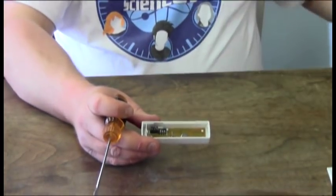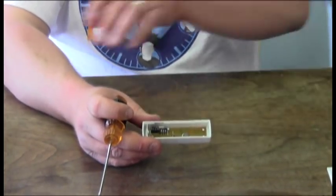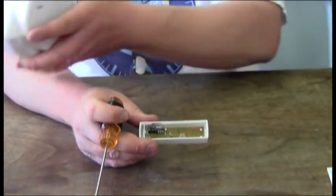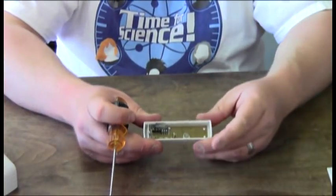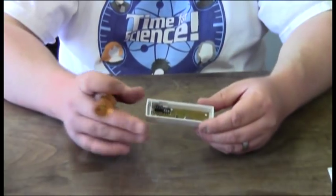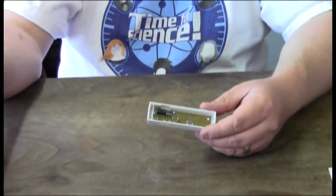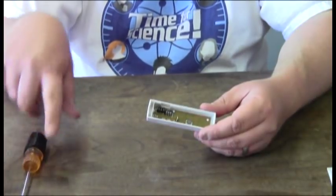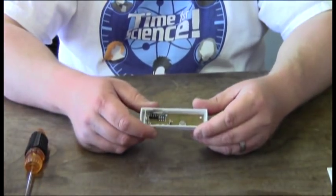The jumper terminals are to change the house code. If let's say some of your close neighbors have the same doorbell or it just doesn't work, you're going to want to remove one jumper at a time to change the code and then test it again. We're not going to be using that for this demonstration.